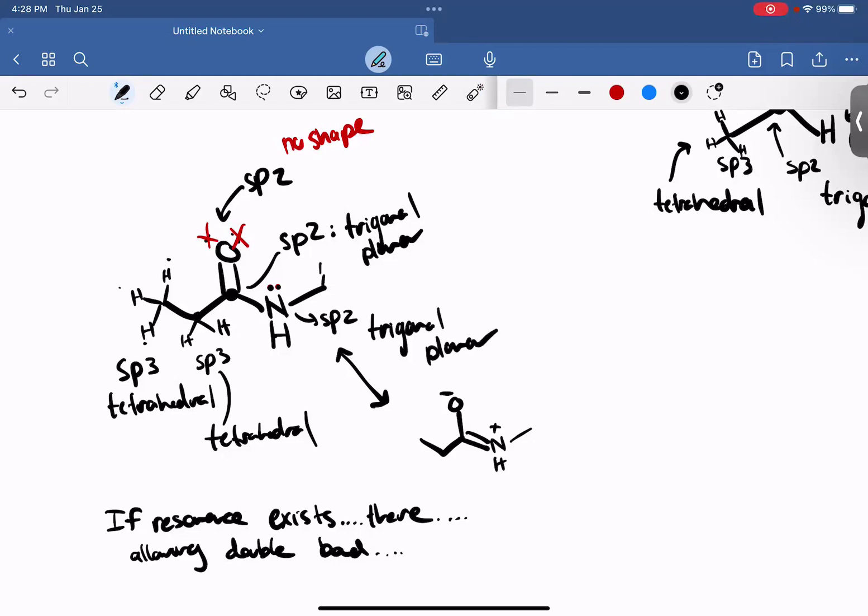And then this guy here is easy. Hydrogen, hydrogen, hydrogen, four things, four bonding regions, SP3 with a shape of tetrahedral.